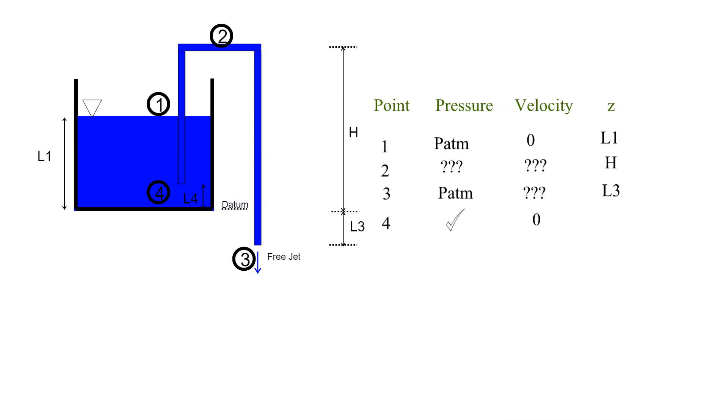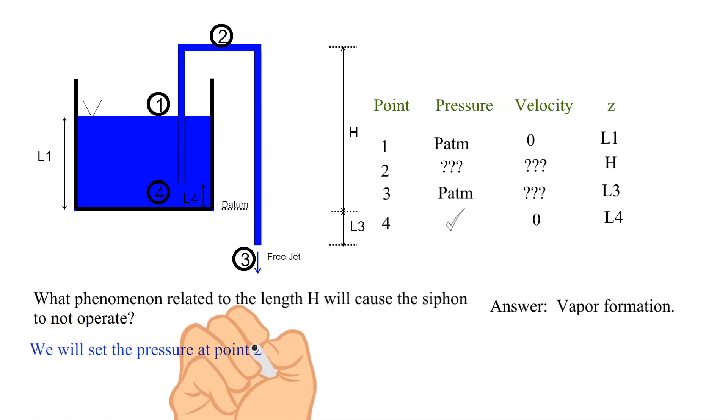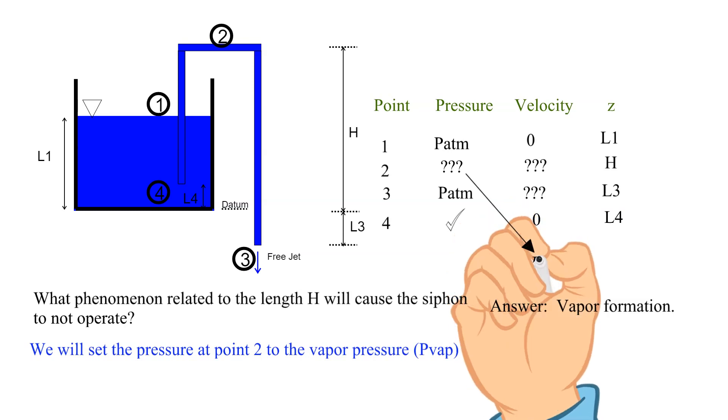For point 4, its pressure is due to its depth below point 1, its velocity is zero since it is a large tank, its elevation is given as L4. Before we move on, what phenomenon will cause the siphon action to break down? The answer is that if the pressure reaches vapor pressure then a vapor cavity will form and the siphon will not operate. We will set the pressure at 2 to the vapor pressure.